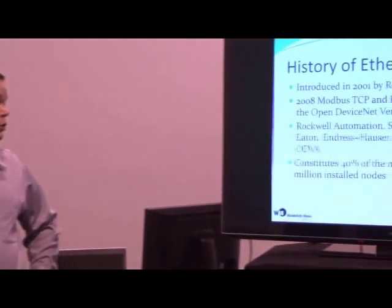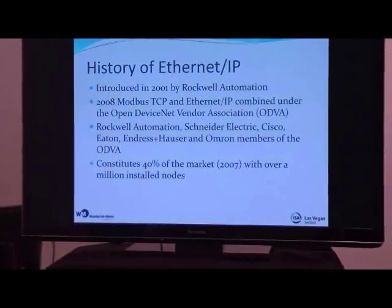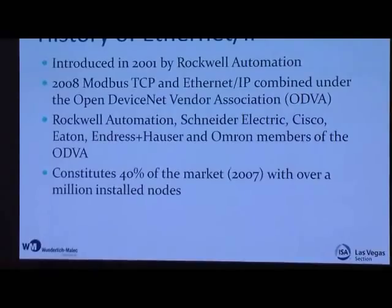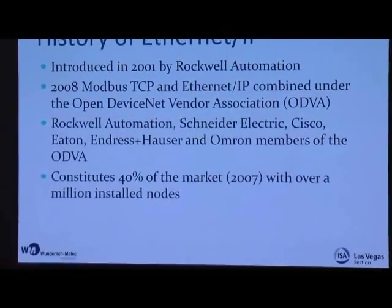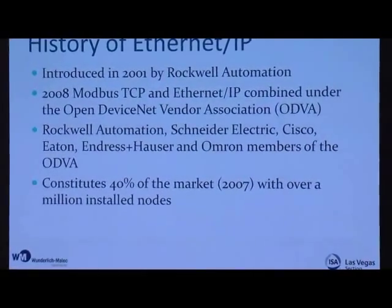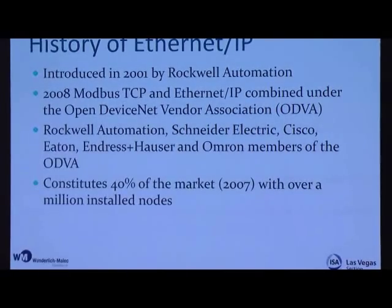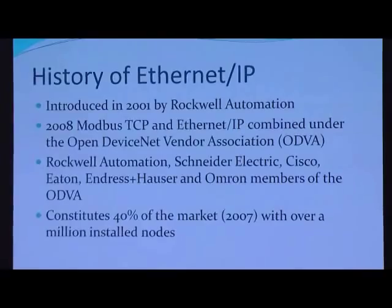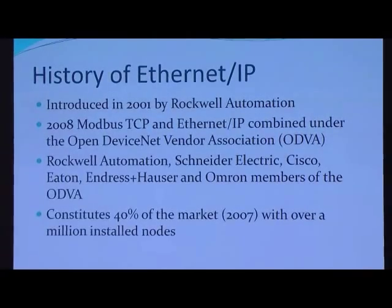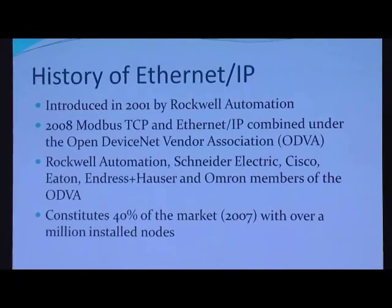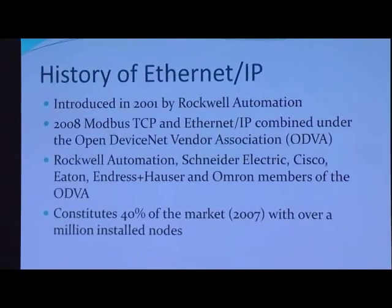The ODVA is the champion for Ethernet IP and is trying to move that standard forward and make it readily accessible to different vendors. The current larger members of the ODVA are Rockwell Automation, Schneider Electric, Cisco, Eaton, Hirschmann, and Omron. Back in 2007, it was estimated that Ethernet IP would constitute approximately 40% of the market in industrial Ethernet installation, and there were already over a million installed nodes of Ethernet IP — a number that has only gone up since then.